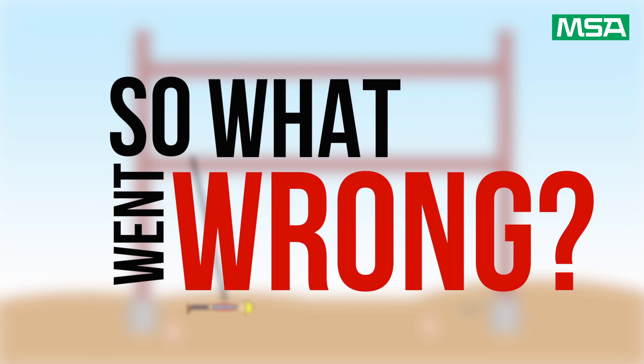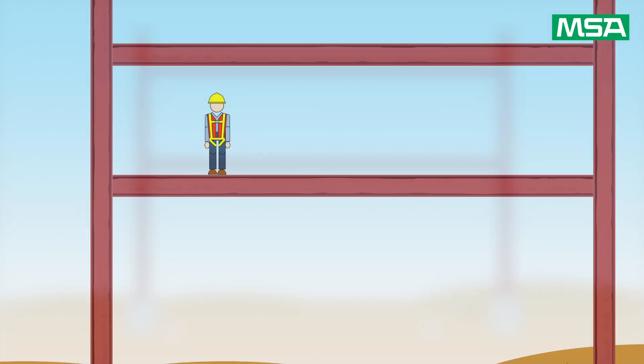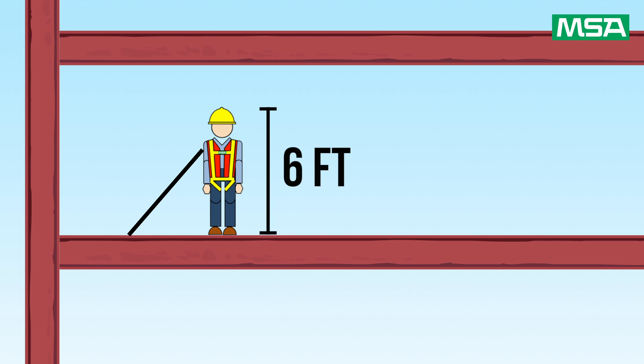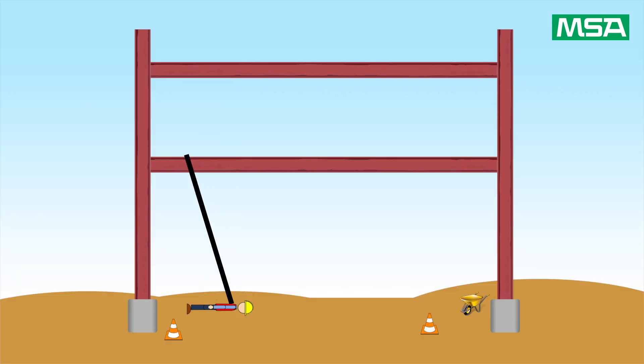So what went wrong? Bob is a six-foot worker who's tied off at the feet with a six-foot lanyard. The overall distance from ground to anchor point is only a total of 12 feet, resulting in Bob's misfortune.